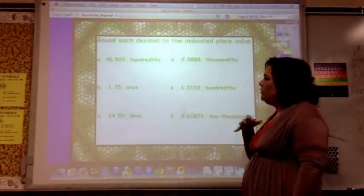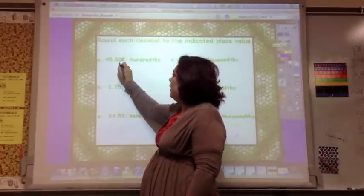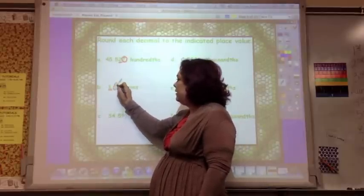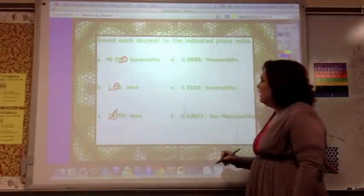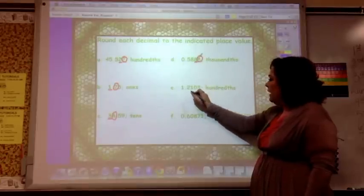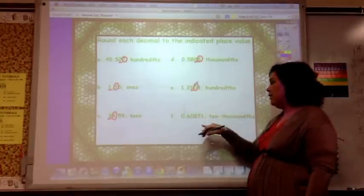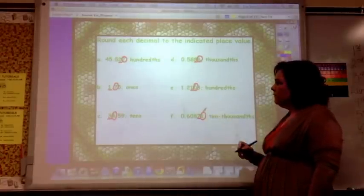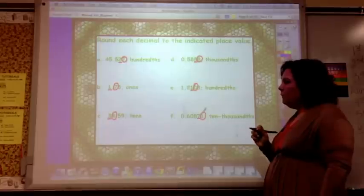Now it's going to tell you to round to the decimal to indicate a place value. So on hundredths, you're going to underline the hundredth and look to that. Ones, you're going to underline the one and look to that. Tens is all the way over here. You're going to underline that and look to that. And thousands, you're going to underline the thousands and look to that. And hundredths, you're going to underline the hundredths and look to that. And ten thousandths, I have to always go back and refresh what it is. Tens, hundredths, thousandths, ten thousandths. So it's this, look at that. So go ahead and make those changes and round those decimals.